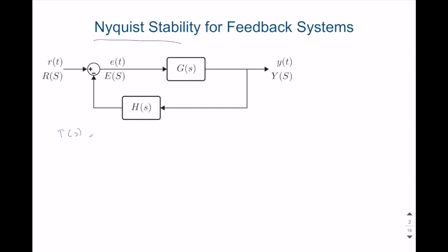T is equal to G over 1 plus GH. And we know from our previous lectures that this part is called GOL. So, we know that the thing that defines the stability of the closed system is the poles of T. If they are all in, for example, the open left half plane, the system is probably stable. But we also know that poles of T are roots of 1 plus GOL, or zeros of this transfer function.